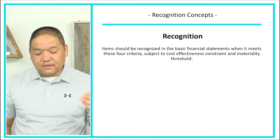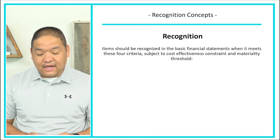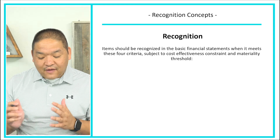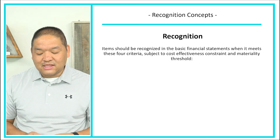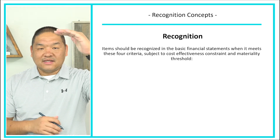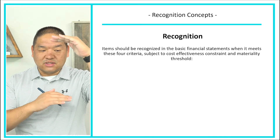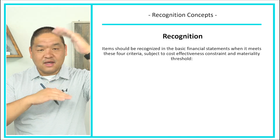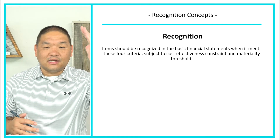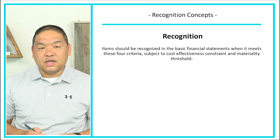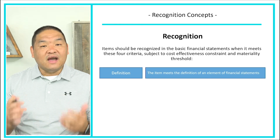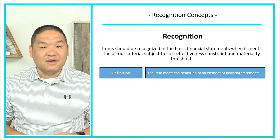According to SFAC 5, items should be recognized in the basic financial statements when they meet four criteria, subject to cost-effectiveness constraints and materiality thresholds. As long as the item is not outside those thresholds, we need to follow these four criteria. If we meet them, we can book it into our books. The first criterion is definition — the item must meet the definition of an element of the financial statement.